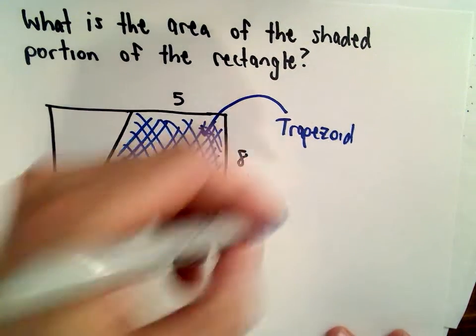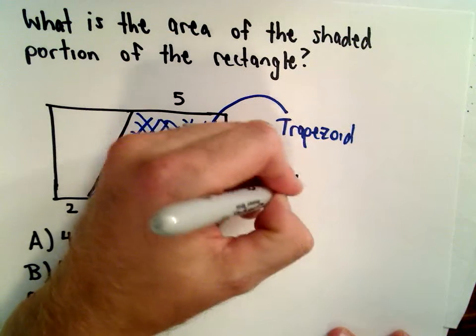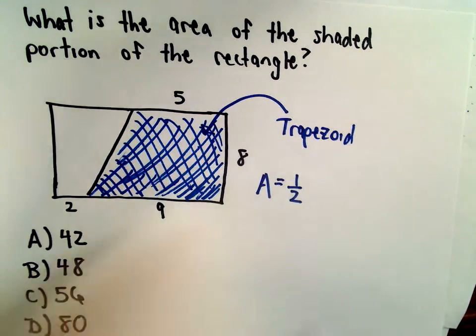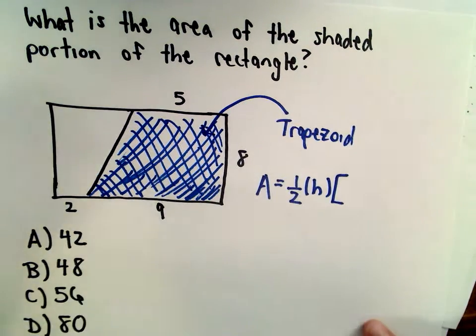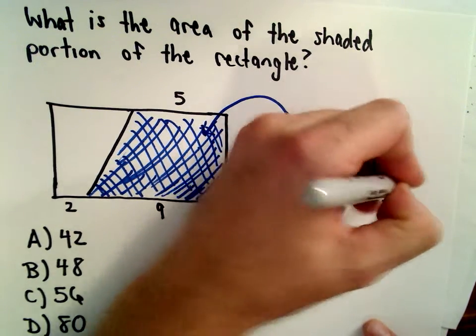Okay, so the area formula for a trapezoid is one-half multiplied by the height, and then multiplied by the quantity base 1 plus base 2.